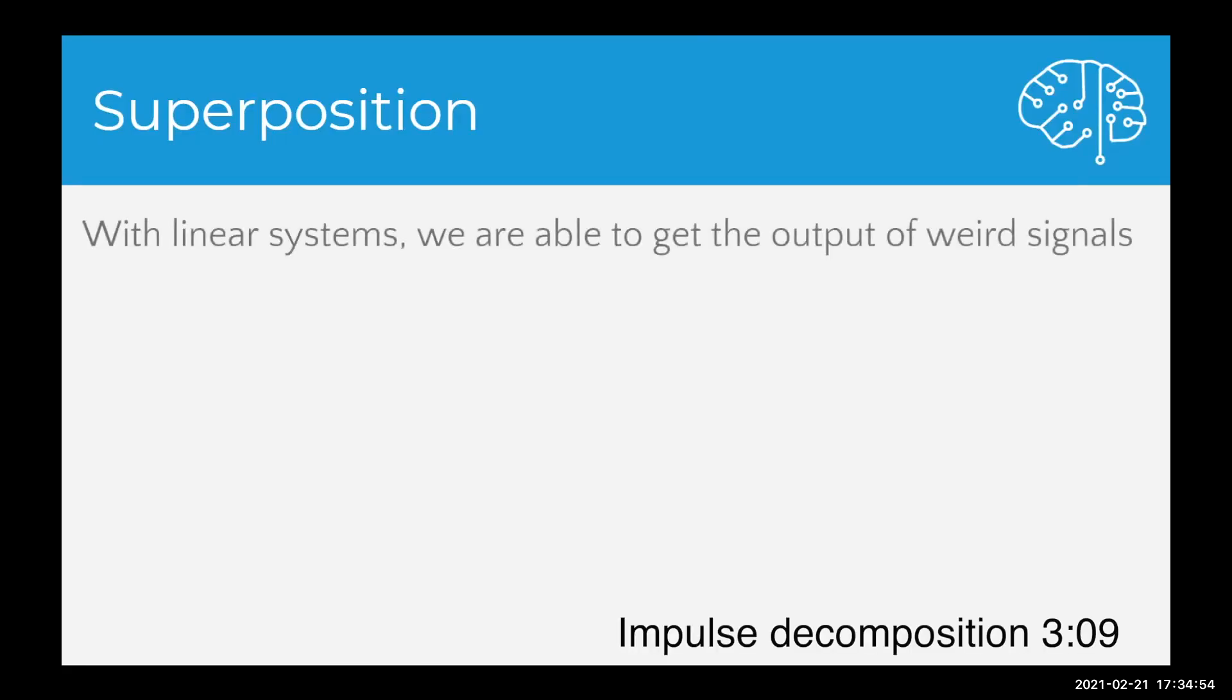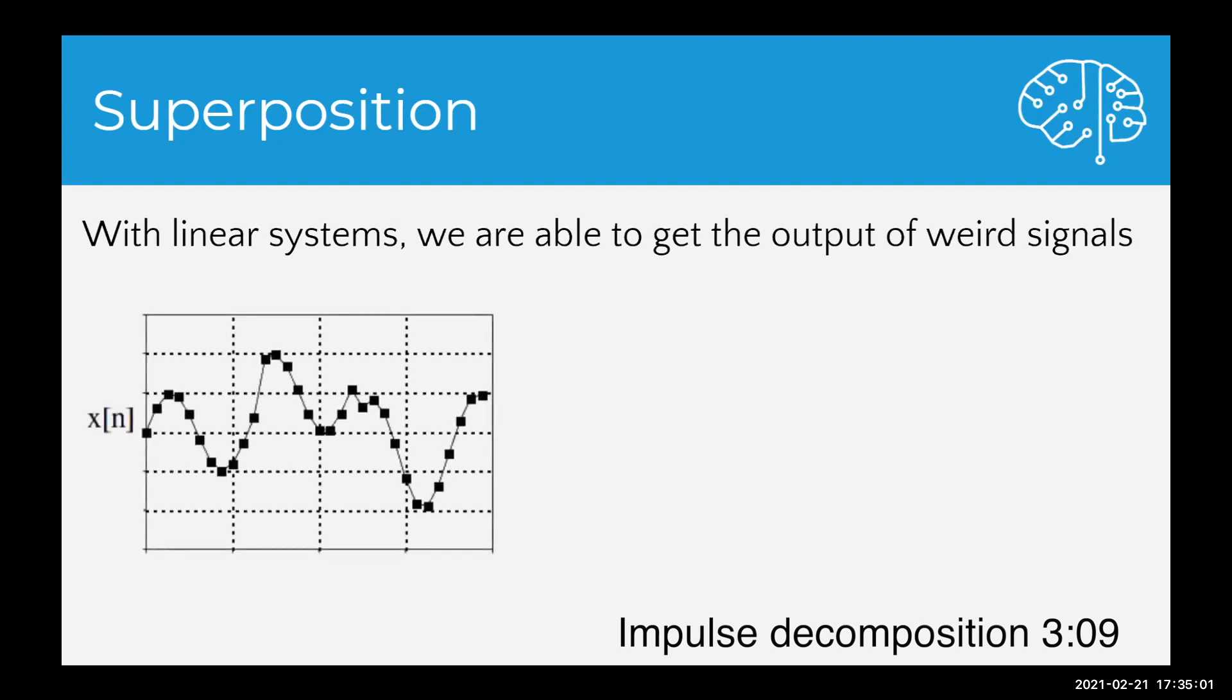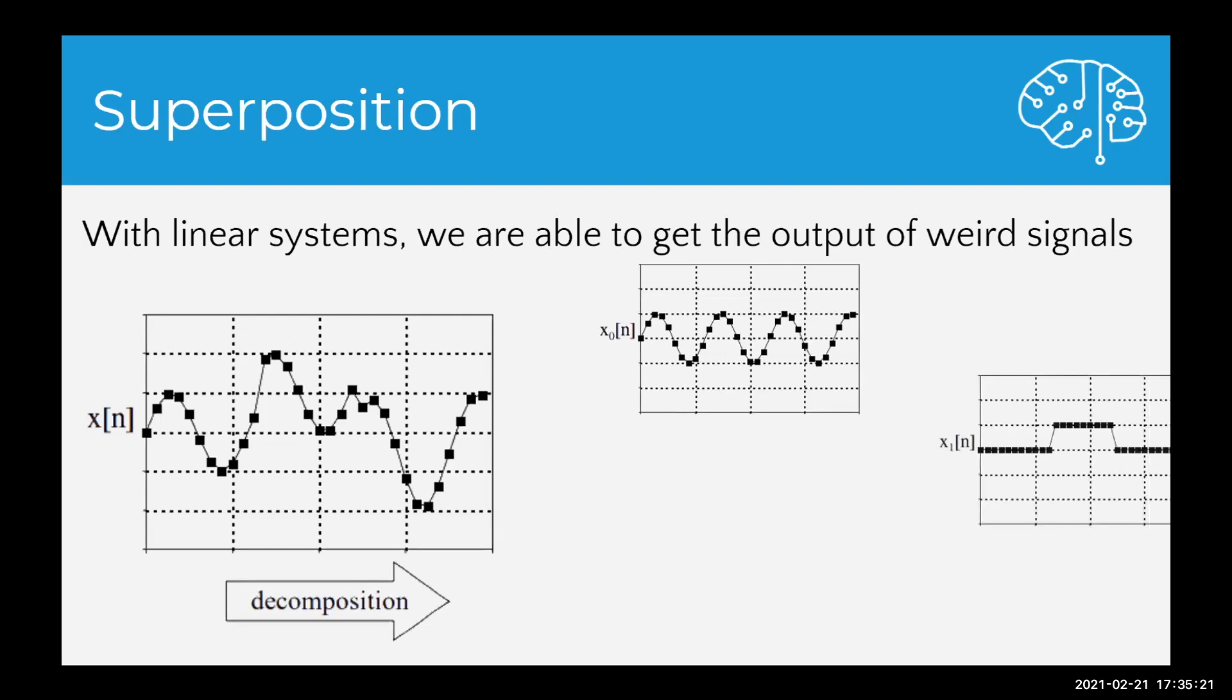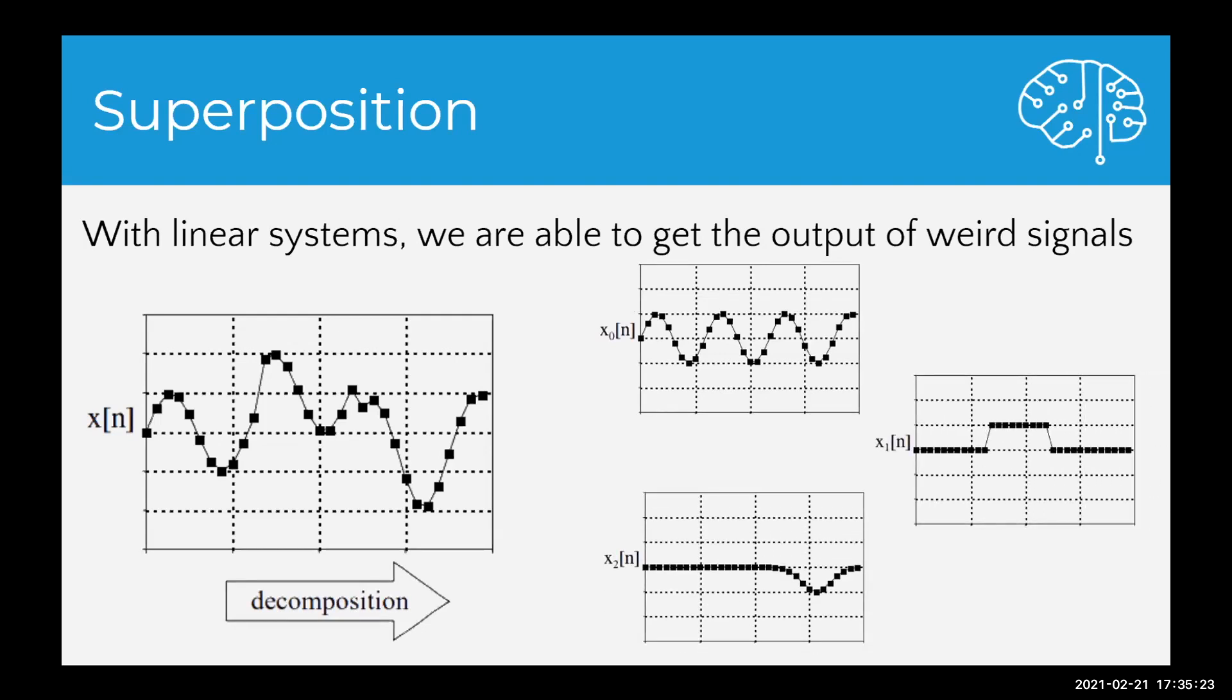Linear systems are very powerful because we are able to get the output of weird signals using something we call superposition. Let's say that we have a weird signal x of n. You might notice that it sort of looks like a funky sine wave. It kind of gets added in the middle and it has a little dip at the end. Well, we can actually decompose this signal into the sine wave, the middle, and the dip at the end.